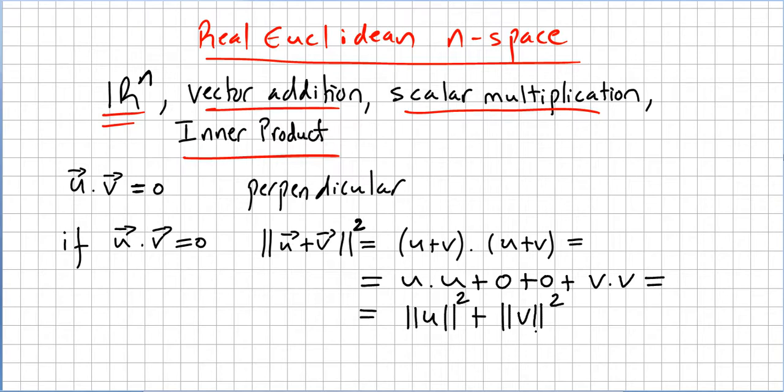And this is nothing else but Pythagoras. This is the Pythagorean theorem. So we call this Euclidean geometry. And we say, since this is true, we say that Rn is an Euclidean space. Because you have Pythagoras, you only have in Euclidean geometry.